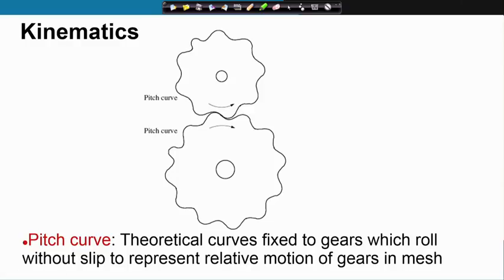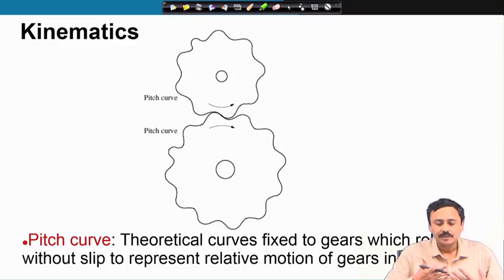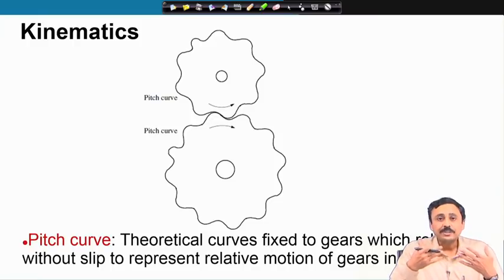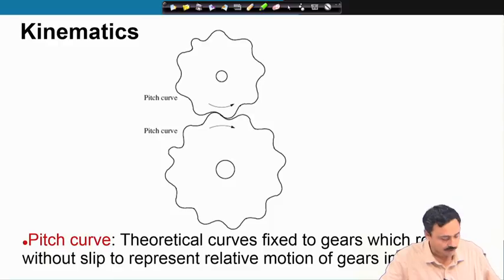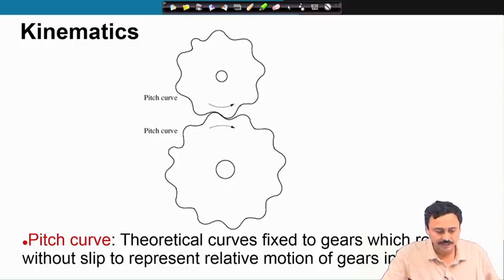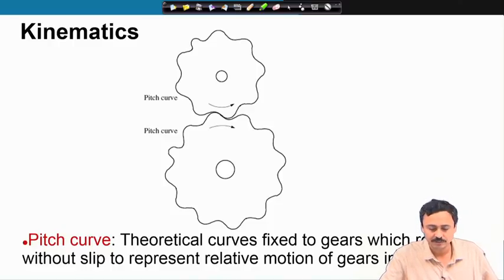Let us now come to the kinematics of gearing action. Our discussion on kinematics will hinge on the important concept of the pitch curve. The pitch curve is a theoretical curve which is fixed to a gear. Since there are two meshing gears, there are two pitch curves. These curves are such that the relative motion of the gears can be thought of as the rolling of one pitch curve over the other — pure rolling without slipping — and this represents the relative rotation of the gears in mesh.